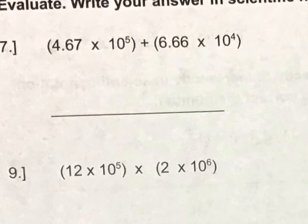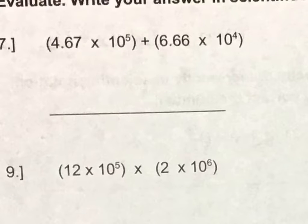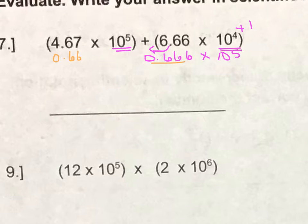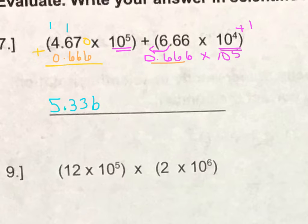For number seven, it's an addition problem. To add it by hand, I would have to have the same power of 10. So I would need to make both of these be 10 to the fifth power. In order to add one to this exponent, I need to move the decimal to the left one, so this becomes 0.666 times 10 to the fifth. Now I just add the coefficients together: 0.666 plus the other coefficient, carrying as needed. And we keep 10 to the fifth power. Double-check that in your calculator in science mode.